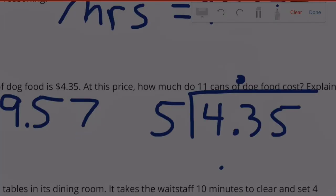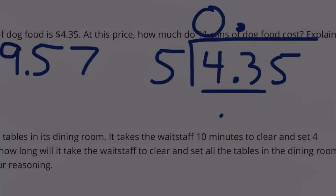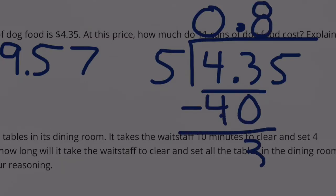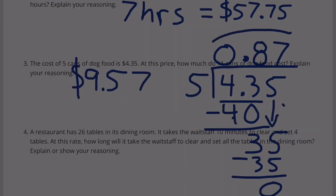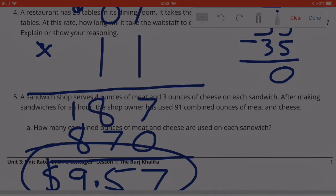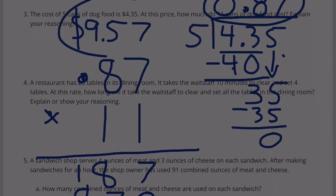I want to double check that. 5 goes into 43 eight times. 8 times 5 is 40. 43 minus 40 is 3. Bring down the 5. How many times does 5 go into 35? 7. 7 times 5 is 35, and we have no remainder. So we just figured out that it's $0.87 per can, and we need to find the cost for 11 cans. $0.87 times 11 gives us $9.57 for 11 cans, which is what we got the first time.